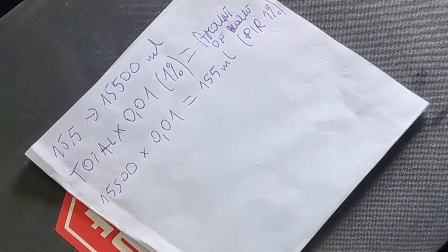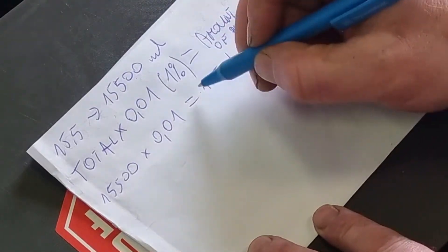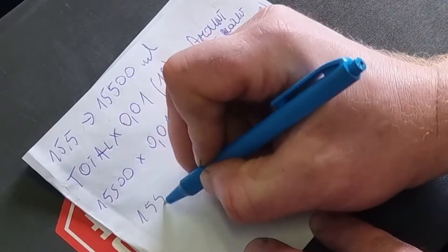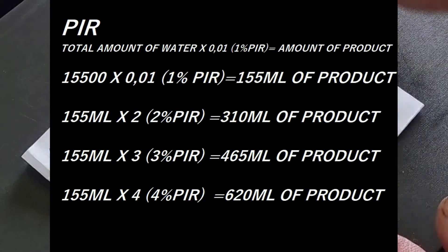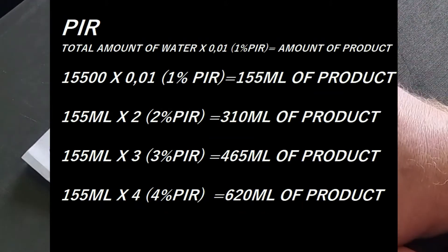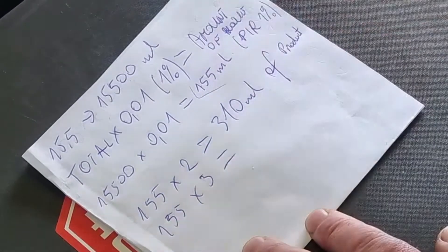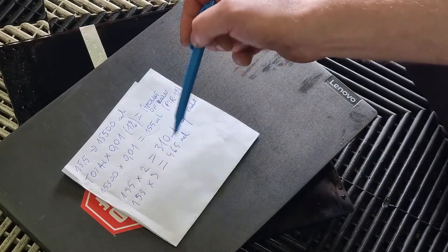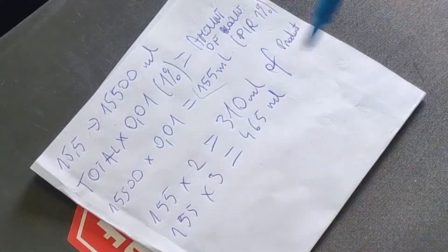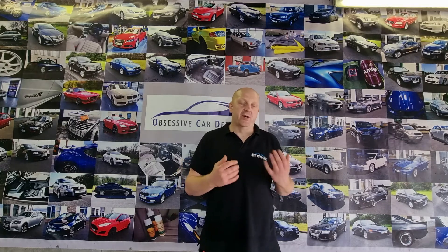To calculate 2%, 3%, or 5% PIoR, we simply multiply the base number by the desired percentage. For 2%: 155 multiplied by 2 gives us 310 milliliters of product. For 3%: 155 multiplied by 3 gives us 465 milliliters. For 5% we just multiply by 5. Calculating the PIoR takes a little time — you have to use a bucket, weigh it, and calculate all the numbers — but if you do it once, you have a good idea of the PIoR for your power washer and foam lance setup, and you don't have to repeat it each time.